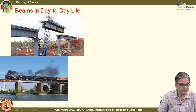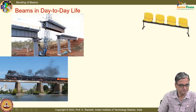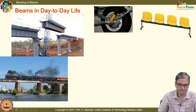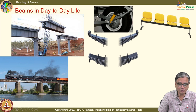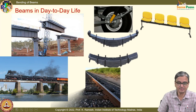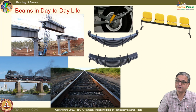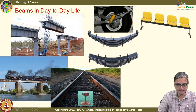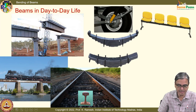You have beams in every place — you have bridges, you have a railroad. You can also have a spring providing a cushioning effect. These are called leaf springs, mainly because they are termed as leaves — multiple leaves are put. They are essentially subjected to bending, and the cross section need not remain constant; it will vary.